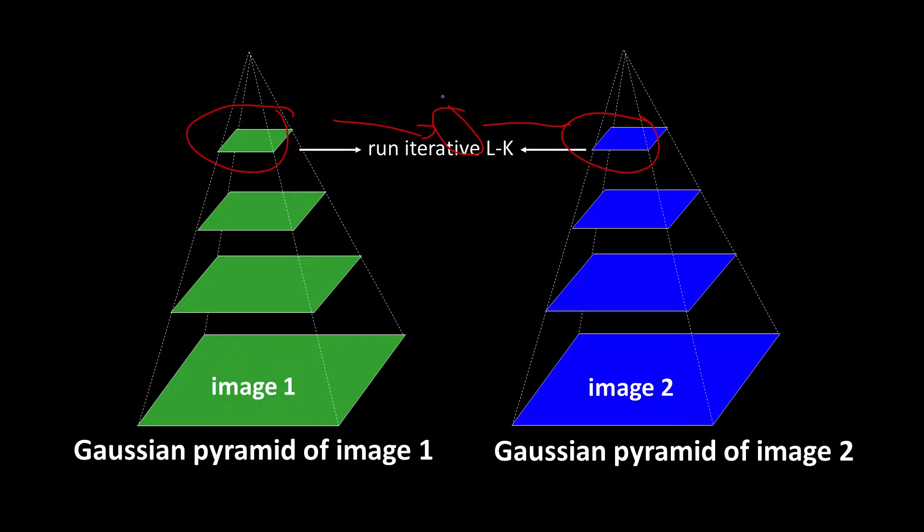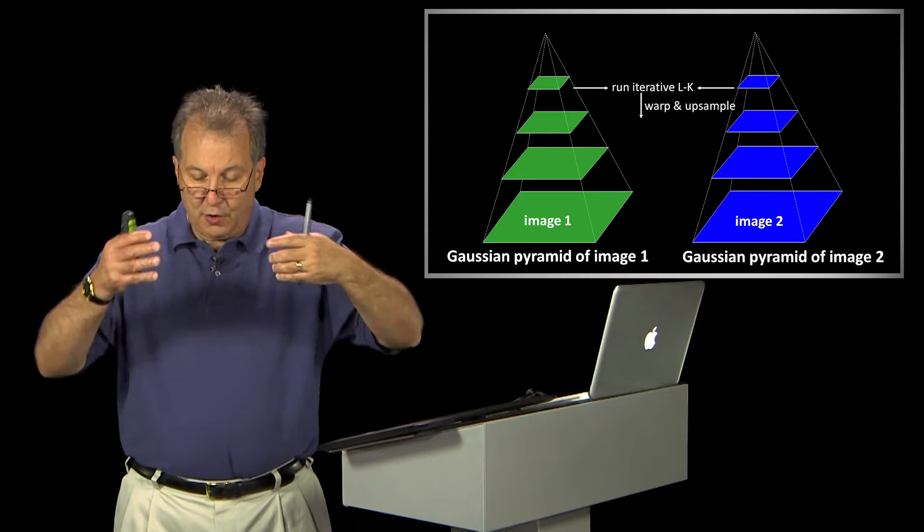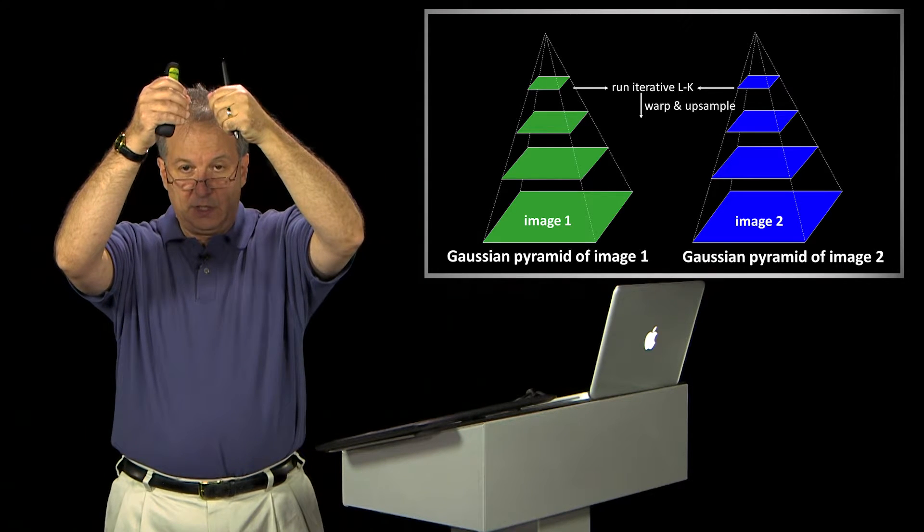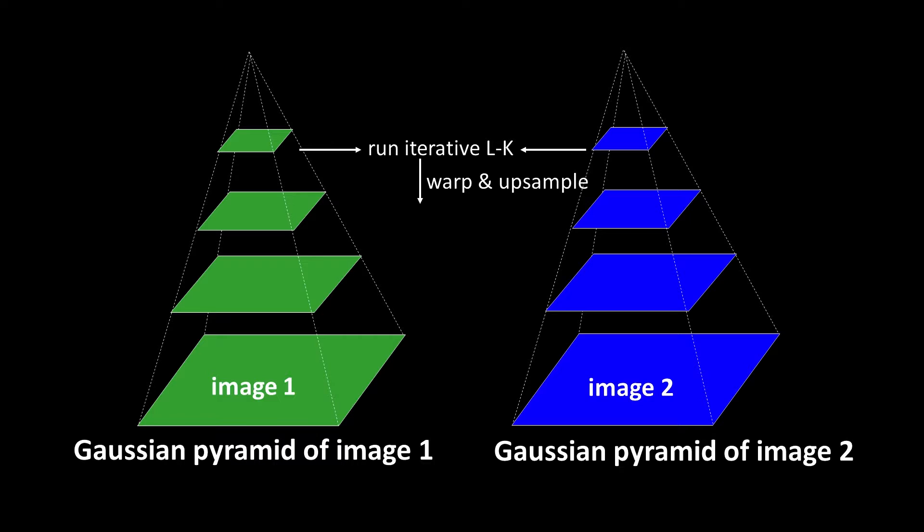Well, what I have to do is go from the coarser to the next finer level. And what's written here is warp and upsample. We're going to go through the details of that. But basically the way you can think about this is I compare something at a coarse level.